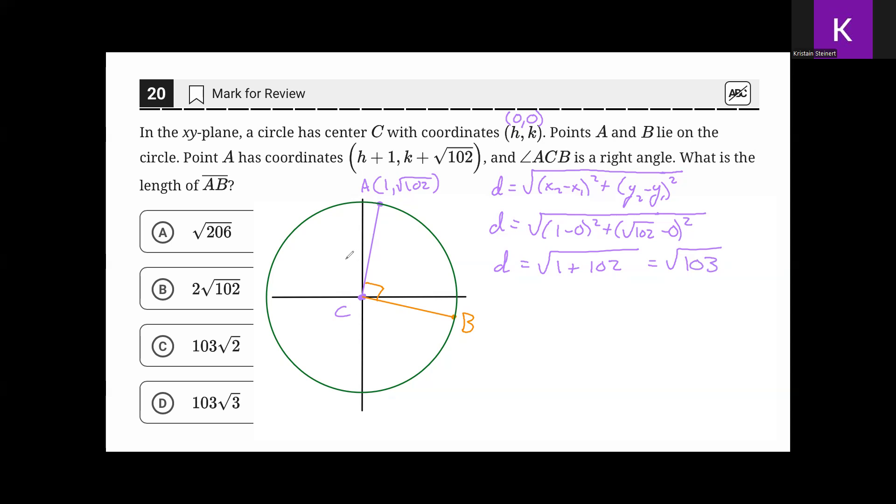That means AC, the length is the square root of 103. Because AC and BC are the same length, BC is also the square root of 103. The question is asking for the length of AB. Taking a look at this figure, we now have a 45-45-90 triangle, or an isosceles right triangle.